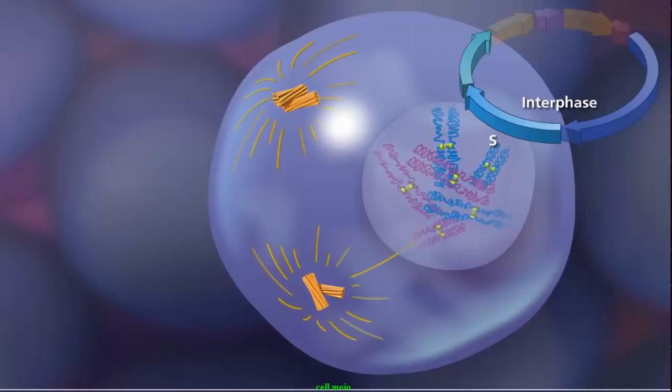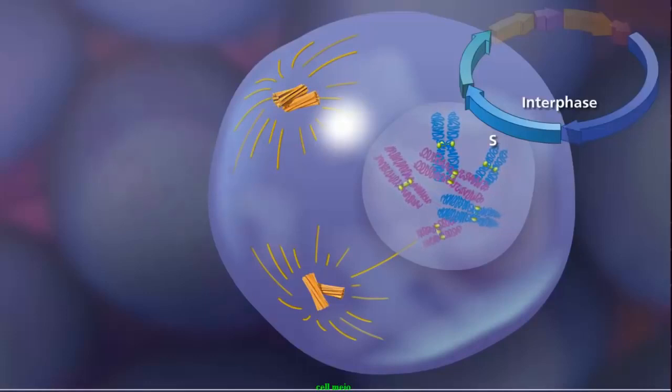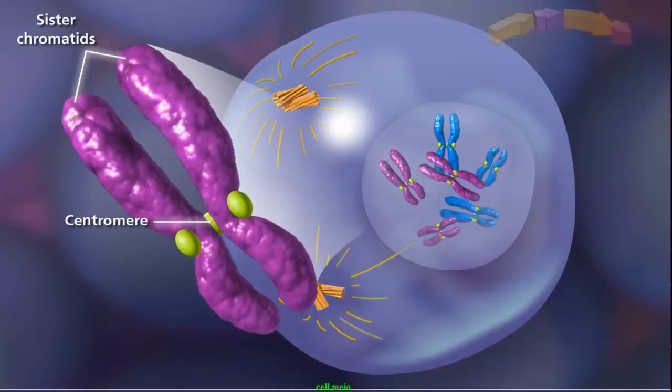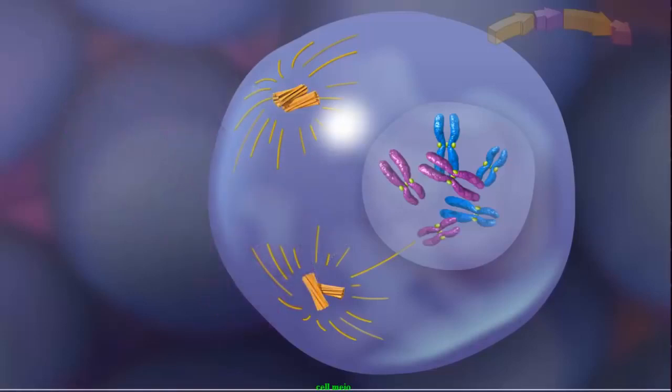Sister chromatids remain attached at the centromere and condense as the cell enters prophase I of meiosis. Up to this point, the cell looks similar to mitosis, but two events occur in meiosis that do not occur in mitosis and lead to genetic diversity.